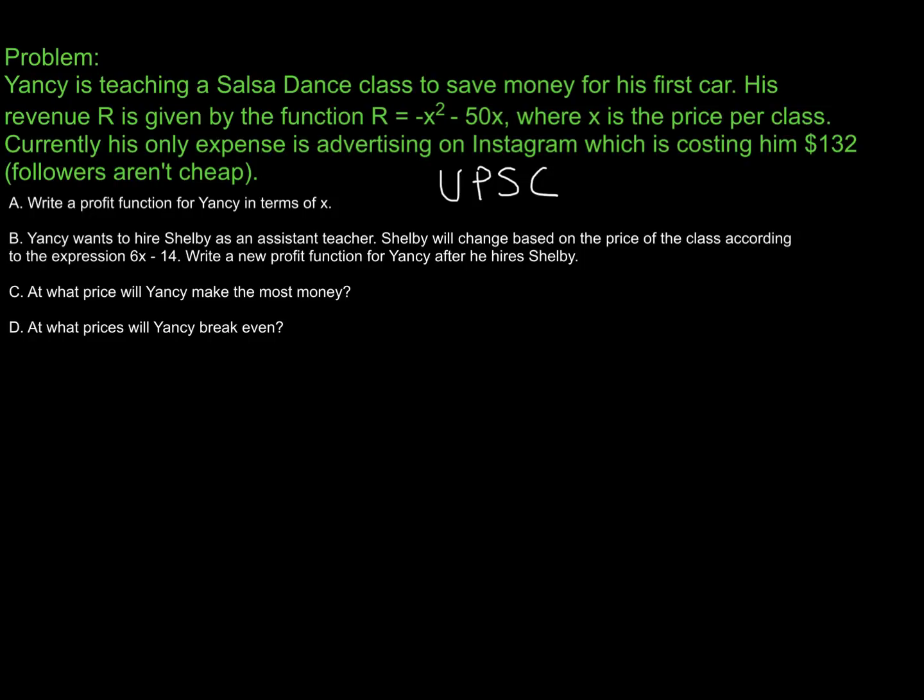Okay, hopefully that first run went well. Just thinking through the understanding piece, I know that I have a function that gives me the revenue, and I also know some parts of what it's costing him to teach his salsa dance class. And so I can just use that relationship that we just talked about for a profit, where we know the profit is the revenue minus the cost. And so we can go ahead and write a pretty simple profit function in part A.